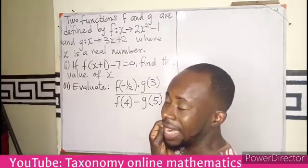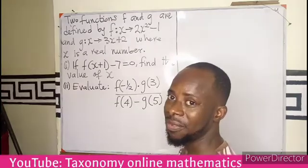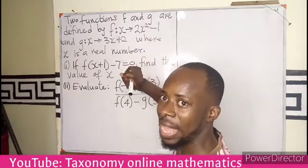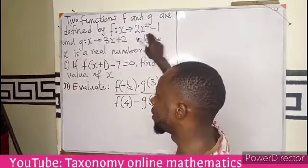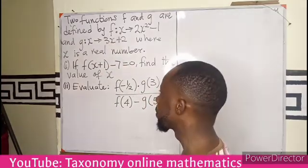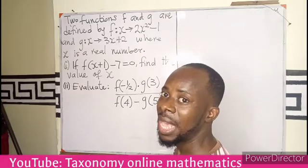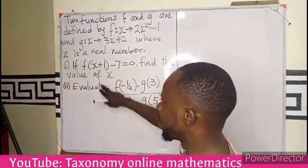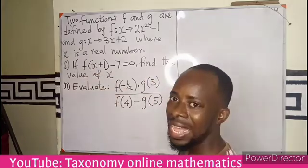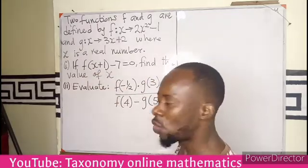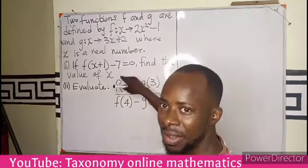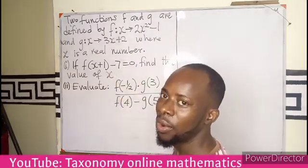We have two functions defined by f and g. The function f of x is 2x squared minus 1, and g of x is 3x plus 2, where x is a real number. Our task is to find the value of x if f of x plus 1 minus 7 equals 0. This will create an equation for which we can find the value of x.